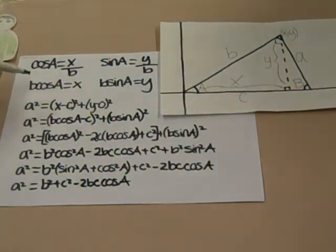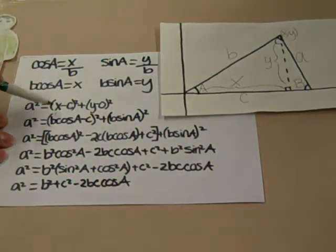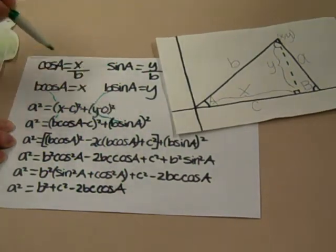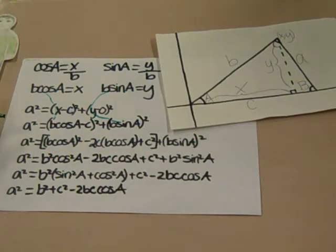Substituting B cosine A for x and B sine A for y gives us A squared equals B cosine A minus C squared plus B sine A squared.